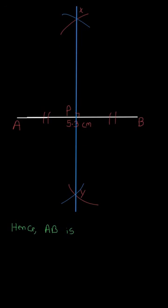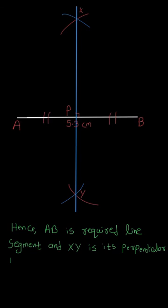So now in the final answer I will write down: hence AB is the required line segment and XY is its perpendicular bisector. I hope you understood the explanation. Thank you.